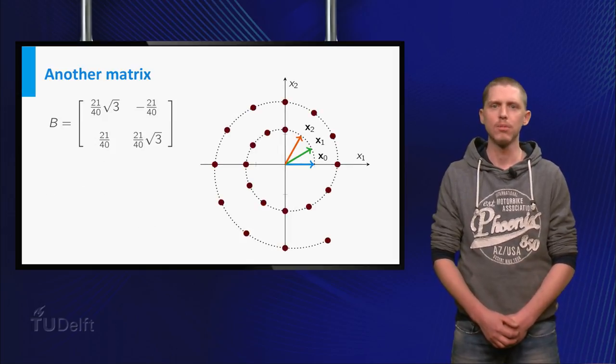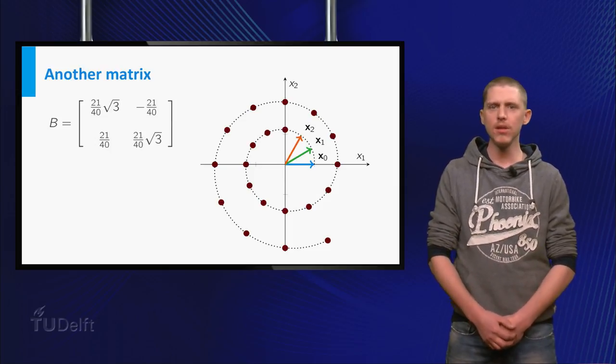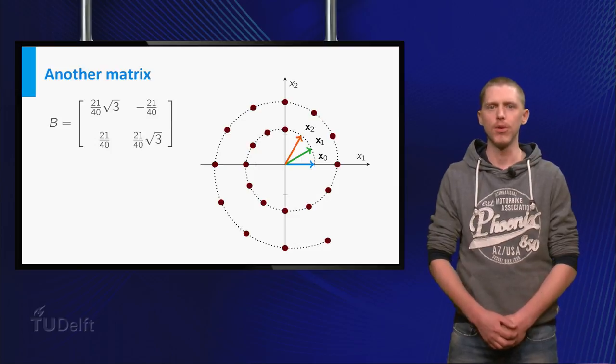If we repeat the multiplication by B 20 more times, you get the shown picture. You can see this is a spiral going away from the origin.